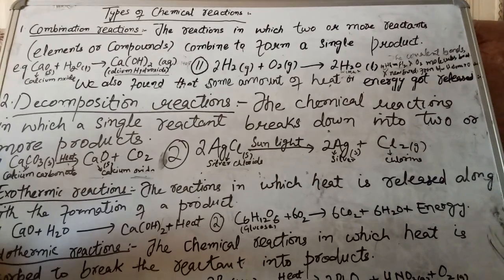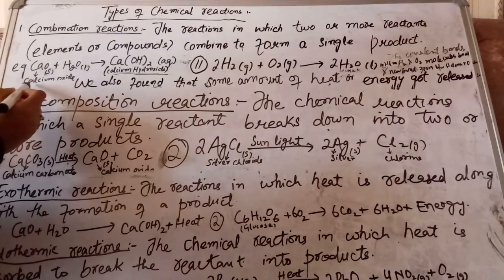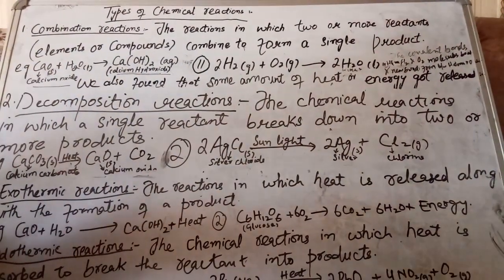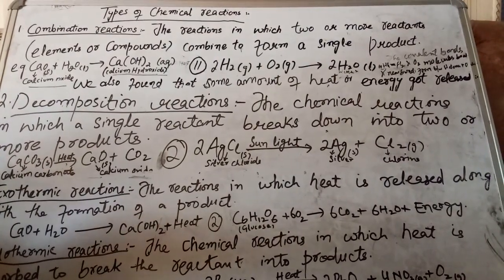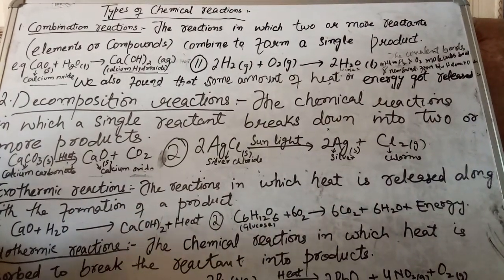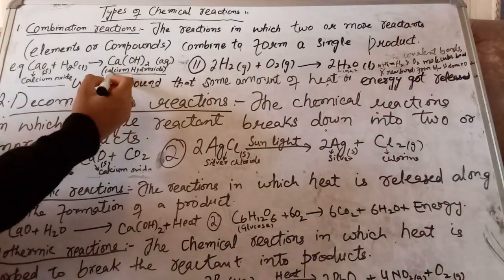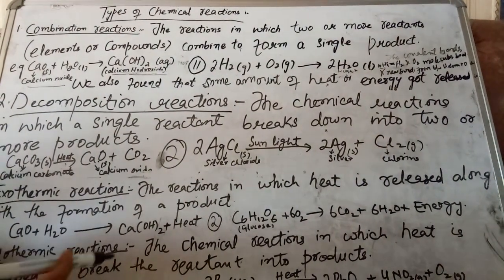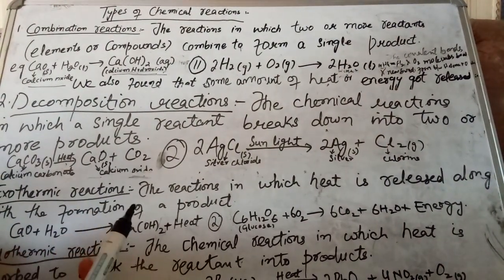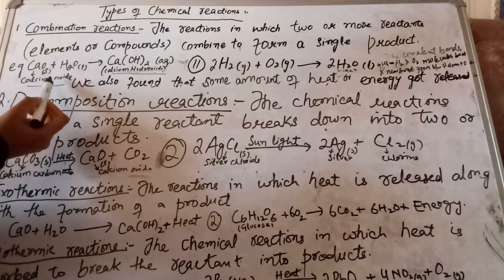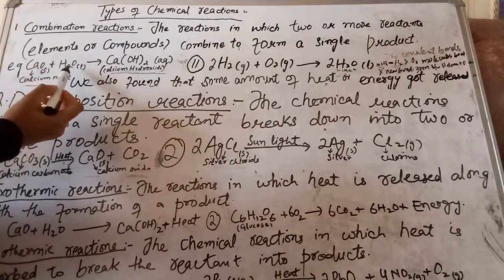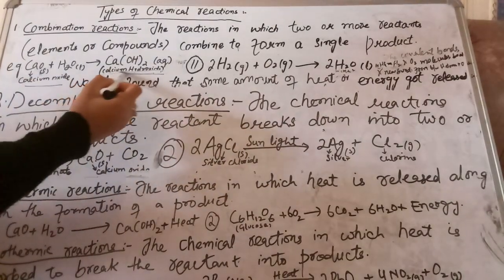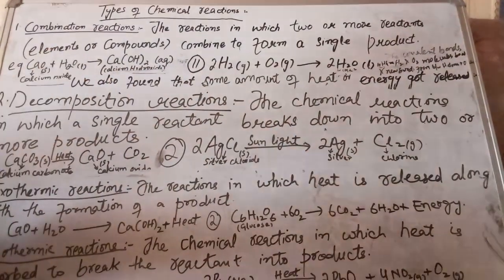For example, let's take calcium oxide in a beaker and add water slowly to it. What happens? The water vigorously reacts with calcium oxide and forms calcium hydroxide. As I mentioned, in combination reactions a single product is obtained. Here, when calcium oxide reacted with water, a single product — calcium hydroxide — was formed.